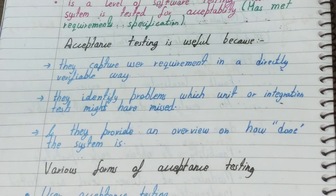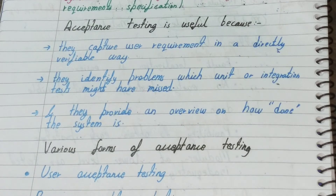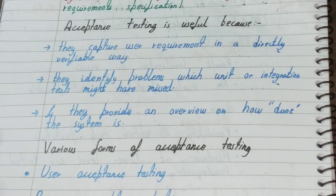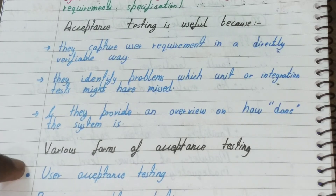There are various forms of acceptance testing. First is user acceptance testing. For example, in a banking system or payments, we can't take a third person for the purpose of testing. So what we do is we call the bank personnel or that particular industry's personnel to test the software — whether it is meeting their requirements. That is user acceptance testing, where the original user is taken into account for testing the software before its release.